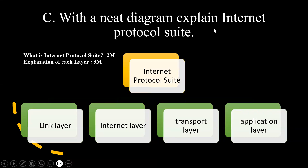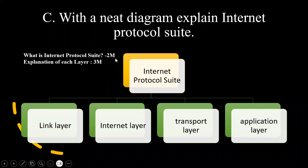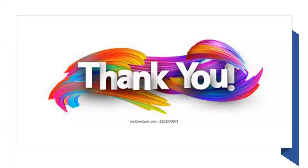With a neat diagram, explain internet protocol suite. This is the abstraction layer followed in the internet protocol suite: link layer, internet layer, transport layer and application layer. You will be explaining each of these layers, which is worth three marks. You also have to explain what internet protocol suite is and why it is used, which is worth two marks. This is how the marks split will be given for each question — read the questions carefully and attend to them. These are the important questions for module 1. Stay tuned for more information discussing the model question paper of module 2. Thank you.